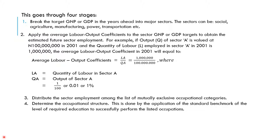Third, distribute the sector employment among the least or mutually exclusive occupational categories. Fourth, determine the occupational structure. This is done by applying the standard benchmark of the level of required education to successfully perform the listed occupations. Once you have been able to achieve this, these are the four requirements you need when using this method.